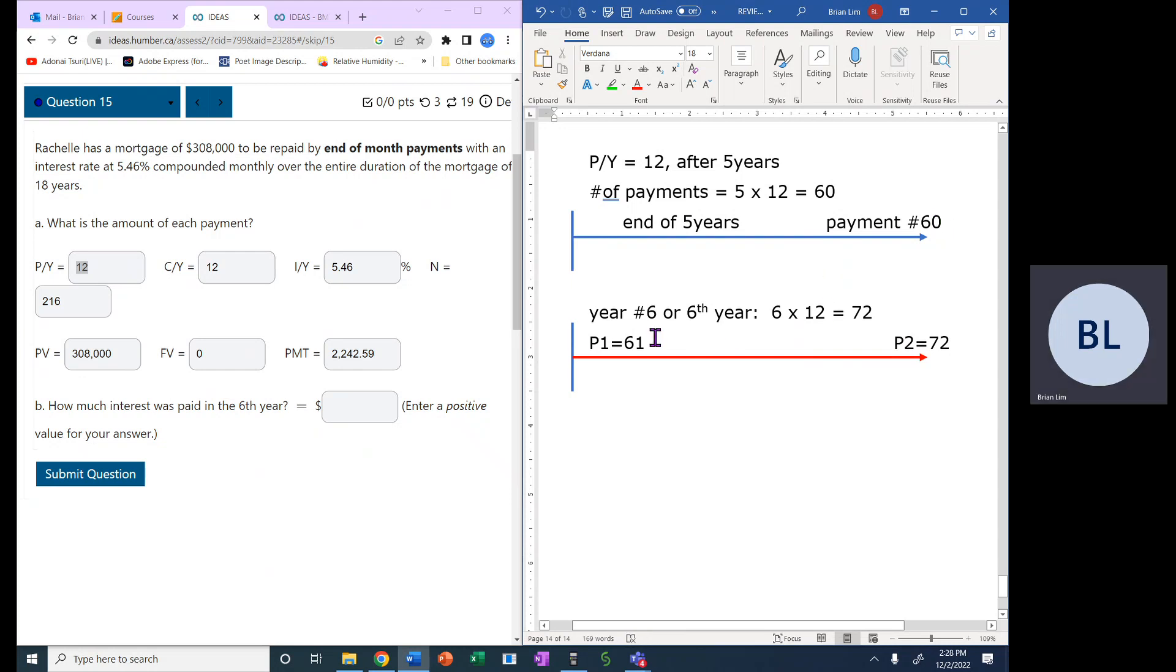In the sixth year, it will start at payment number 61. And six times 12 gives us 72, so the payment for P1 and P2 for year number six goes from 61 to 72. Please remember, it's not 60 because you have to go to the next year or add one to the end of year five.